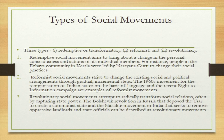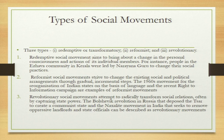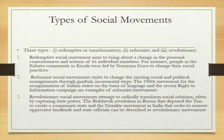The second type is reformist social movements. They strive to change the existing social or political arrangements through gradual or incremental steps — slow and steady, step by step. For example, the 1960s movement for the reorganization of Indian states on the basis of language, and recently the Right to Information (RTI). The campaigns and protests for RTI went on for a long time — these are examples of reformist movements. To bring those changes, you also need changes in the constitution or acts to be passed.